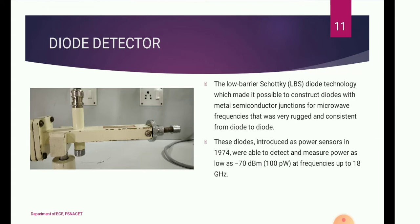The diode detector is a low-power Schottky diode detector, which makes it possible to construct a diode with a metal-semiconductor junction for microwave frequencies. Diode power sensors can detect and measure power as low as −70 dBm at frequencies up to 18 GHz.